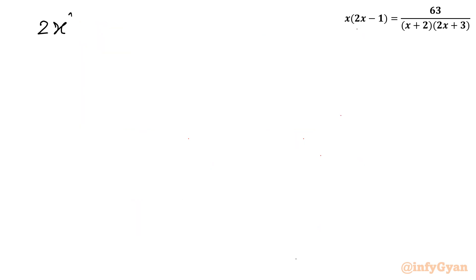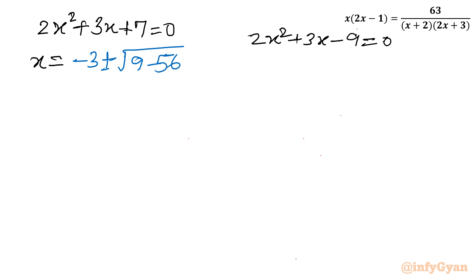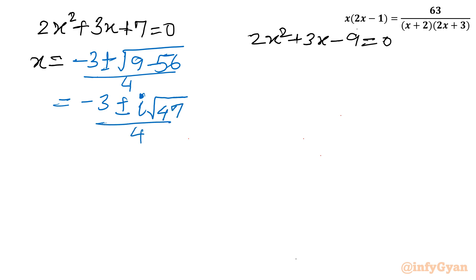First quadratic: 2x squared plus 3x plus 7 equal to 0. Applying the quadratic formula: x equals minus b plus or minus root(b squared minus 4ac) over 2a, which gives minus 3 plus or minus root(9 minus 56) over 4, equal to minus 3 plus or minus root(minus 47) over 4. Since the discriminant is negative, we write minus 3 plus or minus i root 47, divided by 4 — two complex valued solutions.